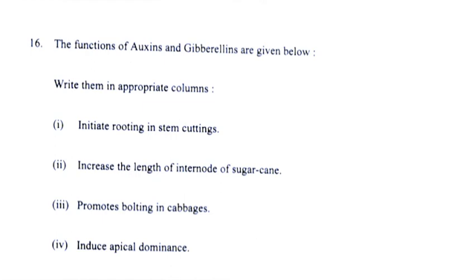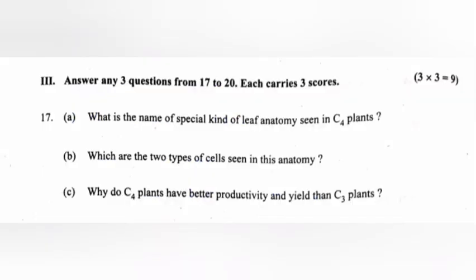The functions of auxin and gibberellin are given below. Write them in appropriate columns. 1) Initiate rooting in stem cuttings — Answer: auxin. 2) Increase the length of internodes of sugarcane — Answer: gibberellins. 3) Promote bolting in cabbages — Answer: gibberellins. 4) Induce apical dominance — Answer: auxin.